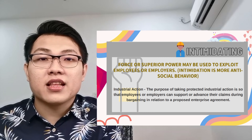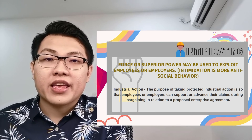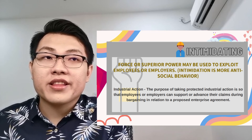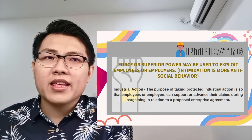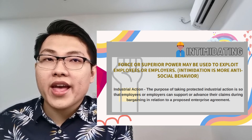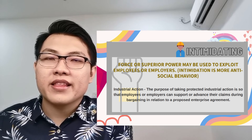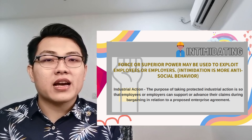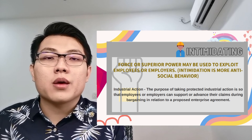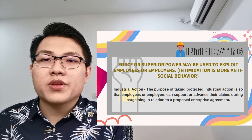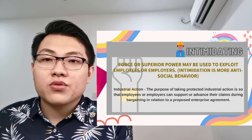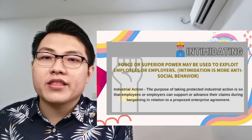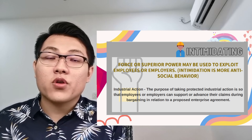Intimidation is also addressed in the Industrial Relations Act. IRA Section 39 states that any person who, in furtherance of a trade dispute and with a view to compel any other person to abstain from doing or to do any act which such other person has a legal right to do or abstain from doing, does so wrongfully and without legal authority, is liable. The IRA thus provides protection to both employees and employers in the workplace. Industrial action is protected for employees or employers to support the advancement of their claims during bargaining in relation to a proposed enterprise agreement. That's all from me, thank you.